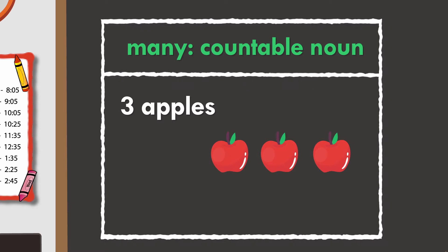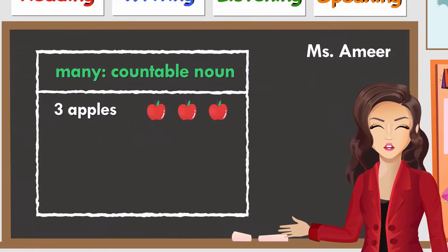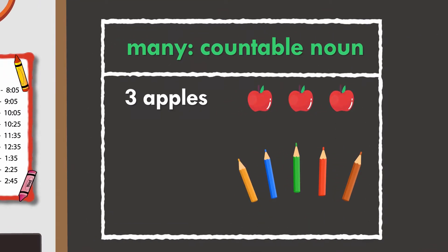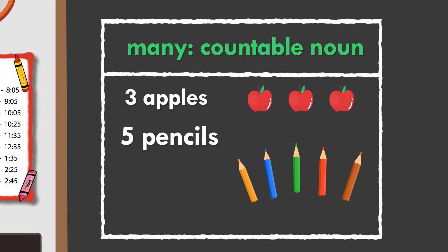Can you think of another example? Pencils. That's right. Pencils. How many pencils do you see on the board? You got it. There are five pencils on the board.